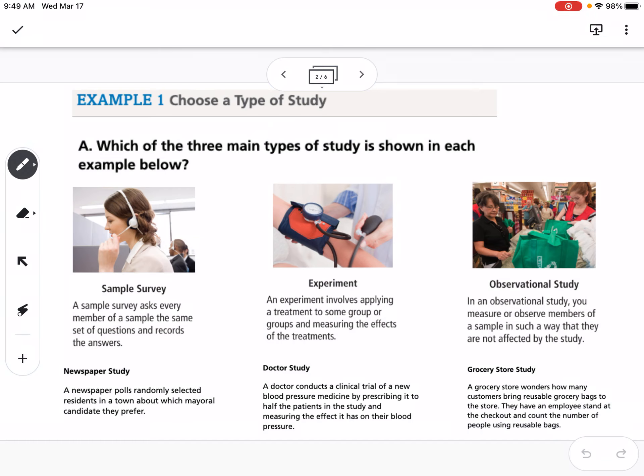Example one is to choose the type of study. Which of the three main types of studies is shown in each example below? The first type we have is a sample survey. A sample survey asks every member of the sample the same set of questions and records the answers. An example of that would be a newspaper study. A newspaper polls randomly selected residents in a town about which mayoral candidate they prefer.